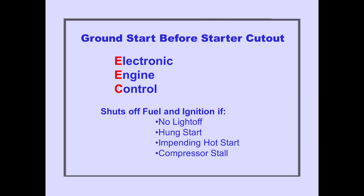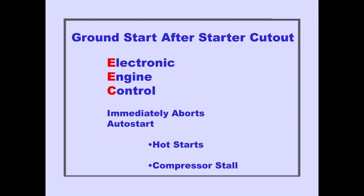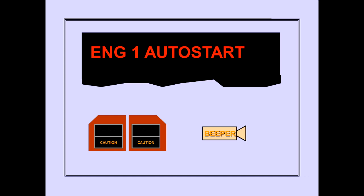During ground start, before starter cutout, the EEC shuts off fuel and ignition if it detects no light off, a hung start, an impending hot start, or a compressor stall. The engine continues to motor. The EEC resupplies fuel and ignition for a second start attempt. The EEC makes three start attempts before aborting the auto-start sequence. After starter cutout, the EEC immediately aborts the auto-start sequence if it detects an impending hot start or a compressor stall. The ICAS caution message engine auto-start is displayed when the EEC aborts the auto-start sequence.